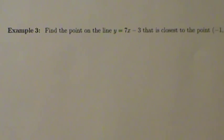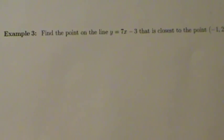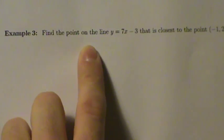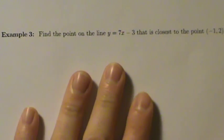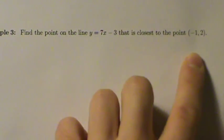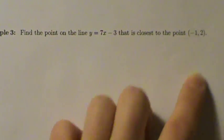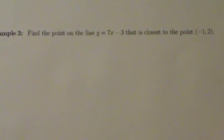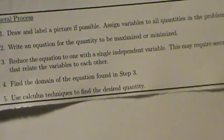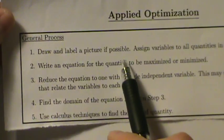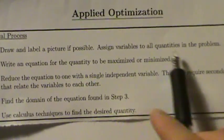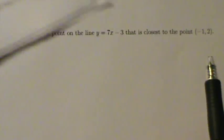Here's example 3 with applied optimization. We want to find the point on the line y equals 7x minus 3 that's closest to the point negative 1 comma 2. We'll go through these same general steps. Step 1: draw and label the picture if possible, and assign variables to all quantities in the problem.